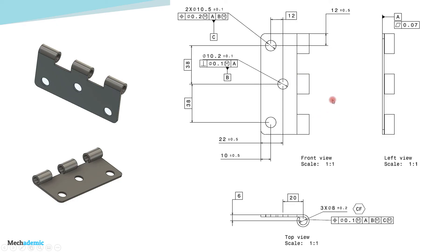The datum scheme is now set: the resting face is datum feature A, the center locating hole is datum feature B, and the pattern of the other two holes is datum feature C. The pinhole is then controlled with respect to these three datum features — a positional control of 0.1, meaning a cylindrical tolerance zone of 0.1 at maximum material condition, with respect to datum A, datum B at maximum material boundary, and datum C at maximum material boundary.